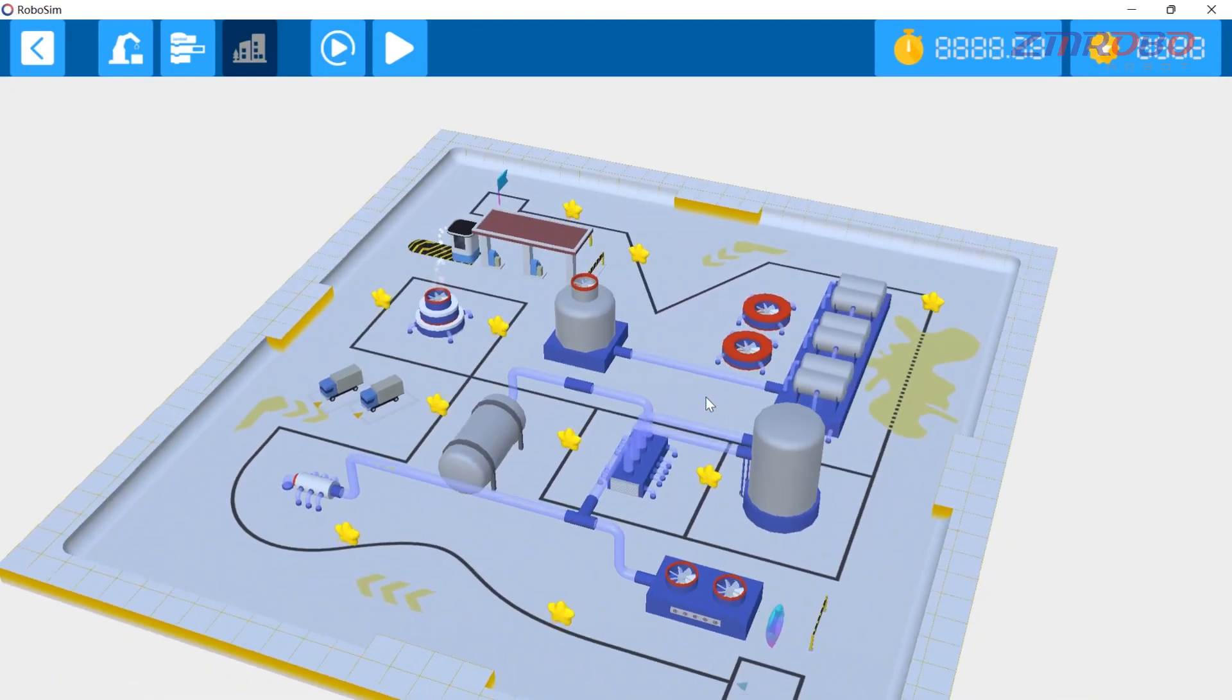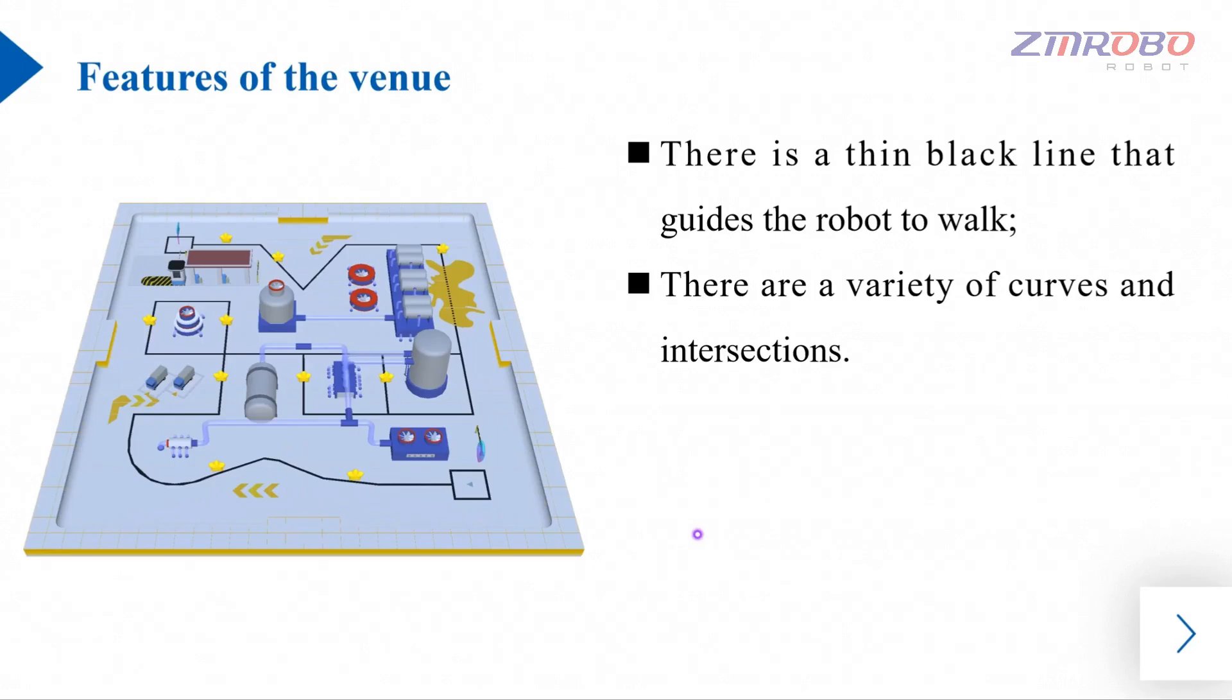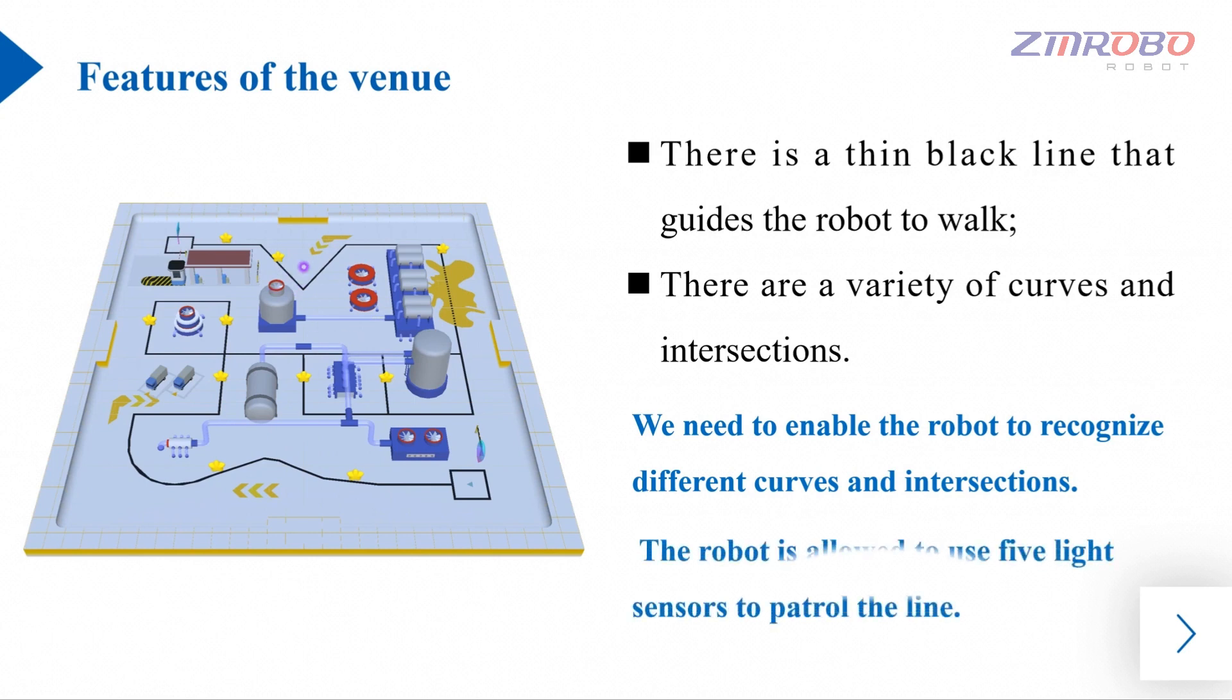Take a look at this training venue. By observing, we can see that there is a black line that guides the robots to walk. The guiding line is relatively thin and has a variety of curves and junctions. This requires the robot to be able to recognize the different curves and junctions. We can have the robot patrol the lines using 5 light sensors.